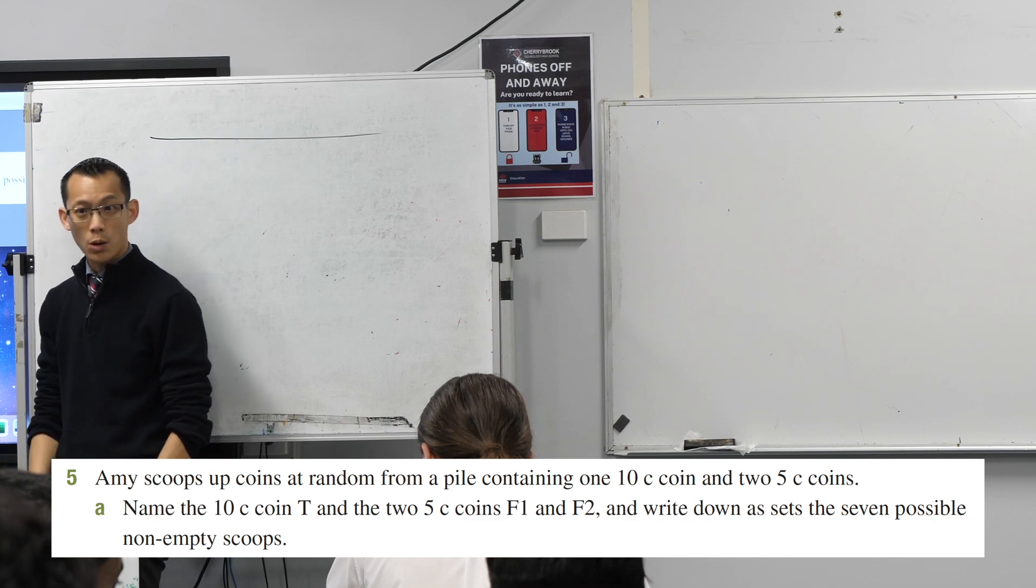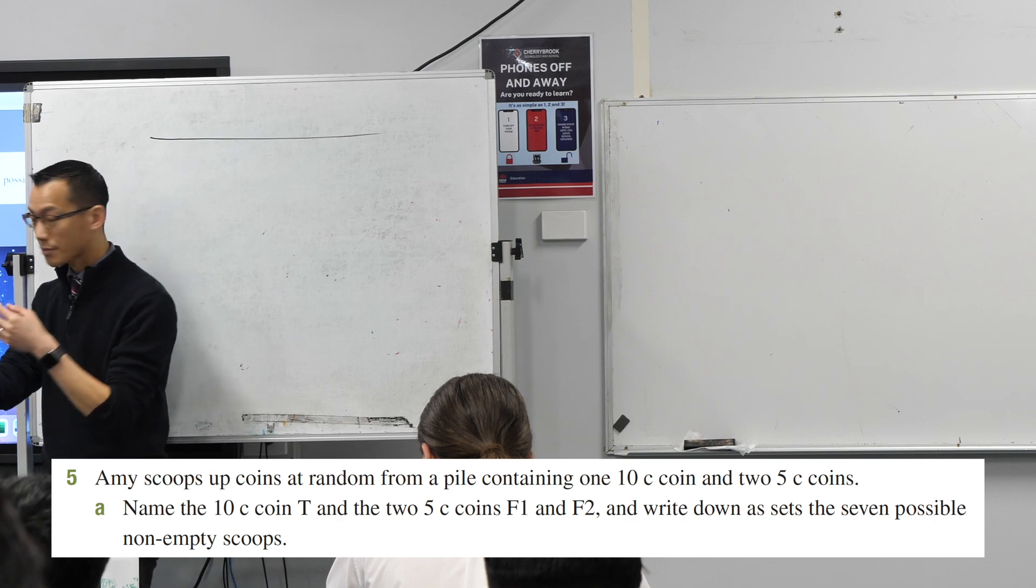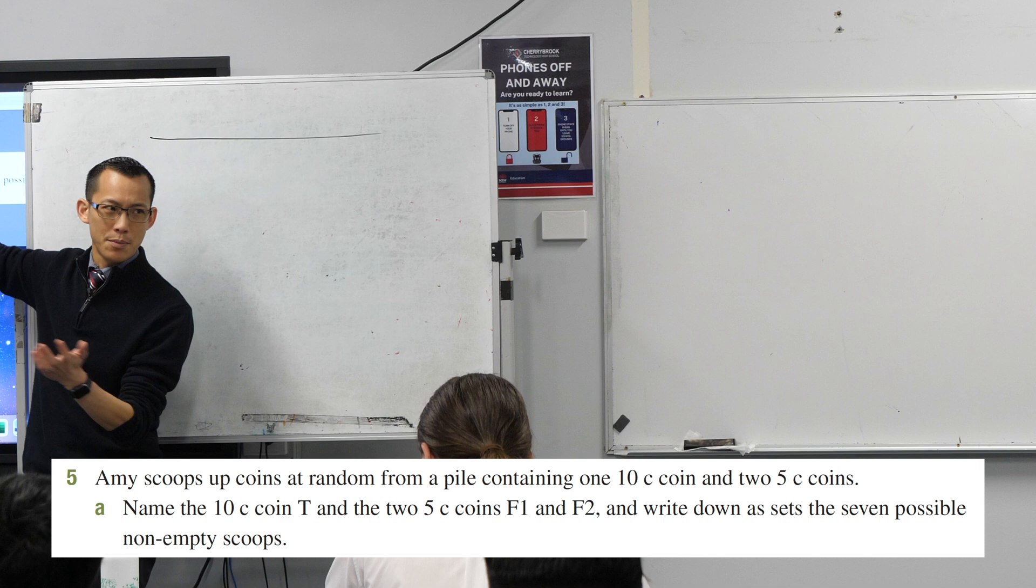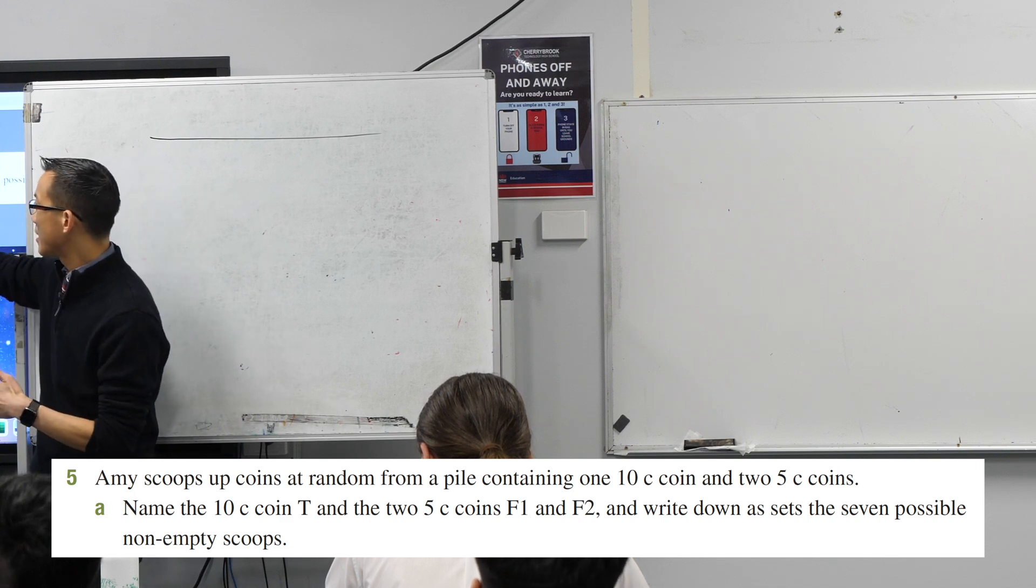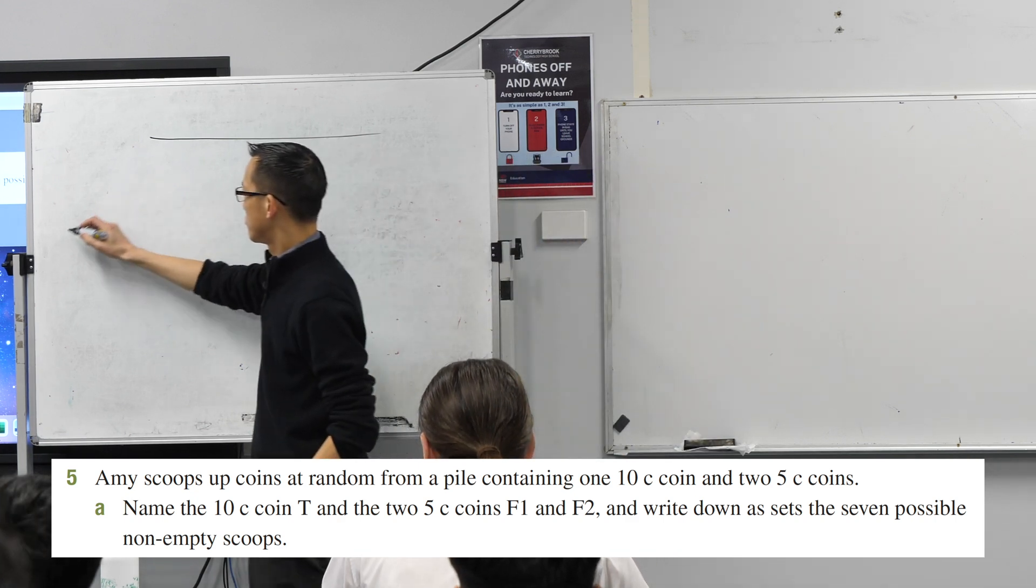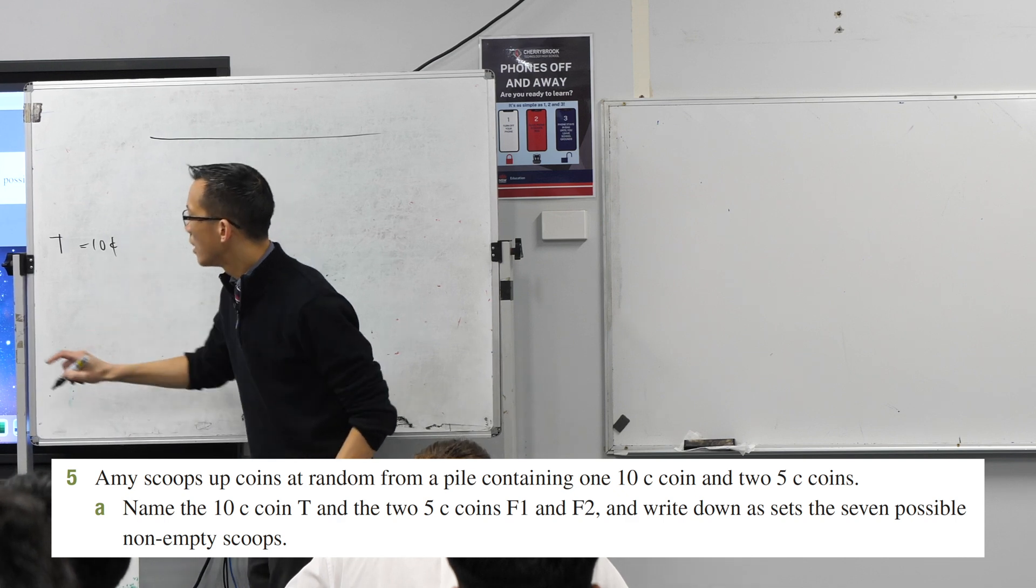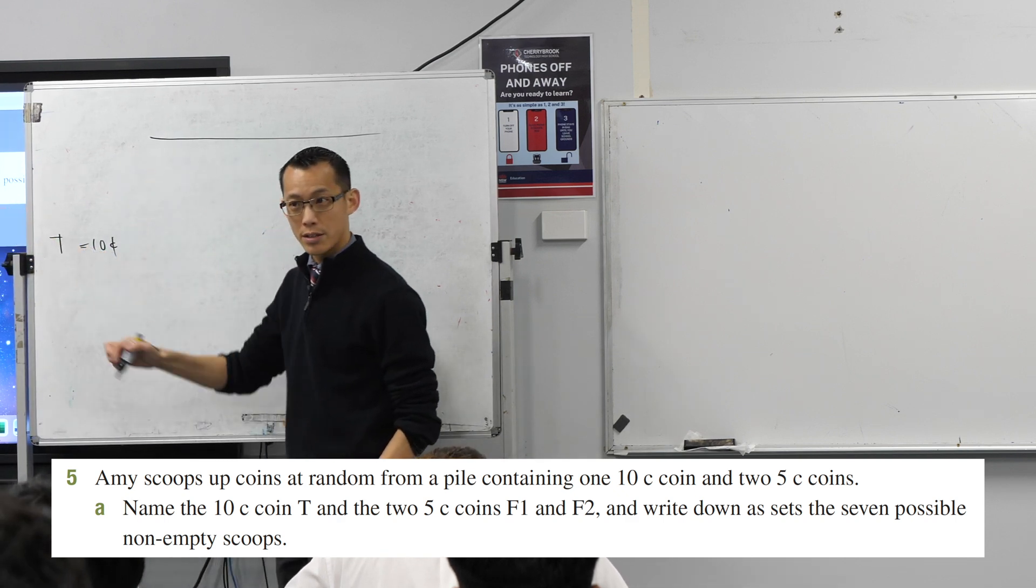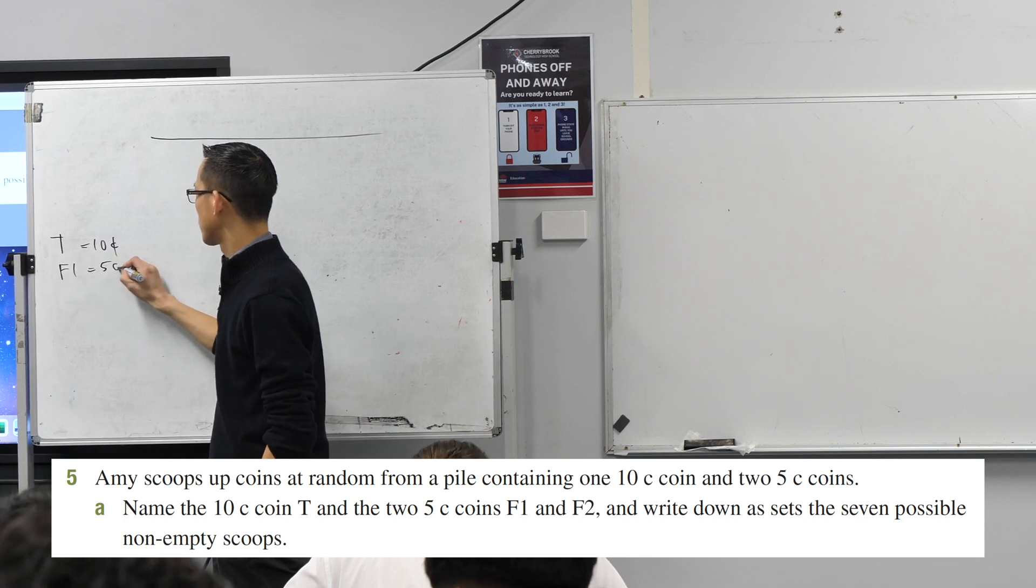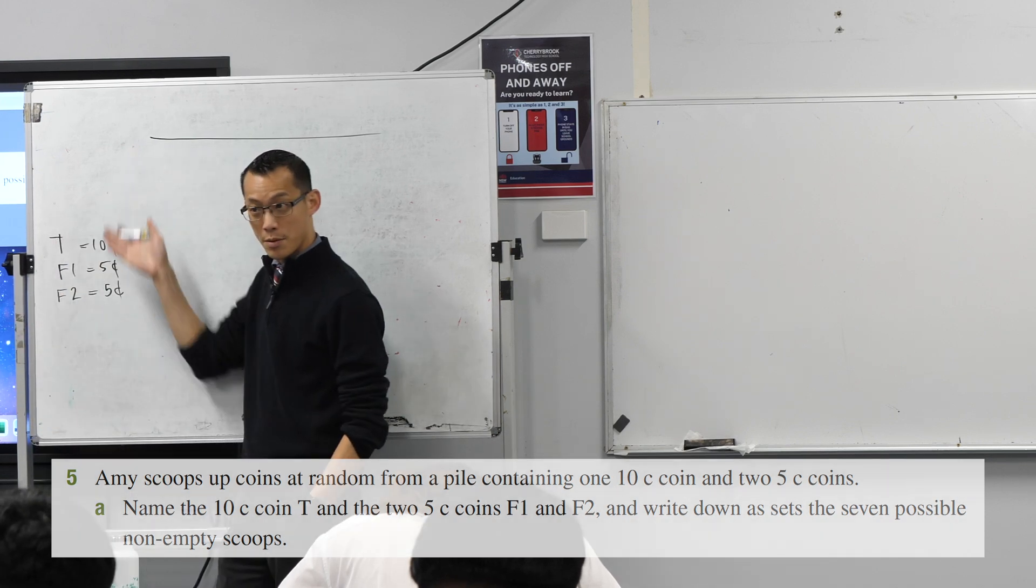Amy scoops up coins at random from a pile containing one 10-cent coin and two 5-cent coins. Part A says name the 10-cent coin T for 10. I'm going to put it here. And the two 5-cent coins F1 and F2. F1 equals 5 cents, F2 equals 5 cents. I've named them.